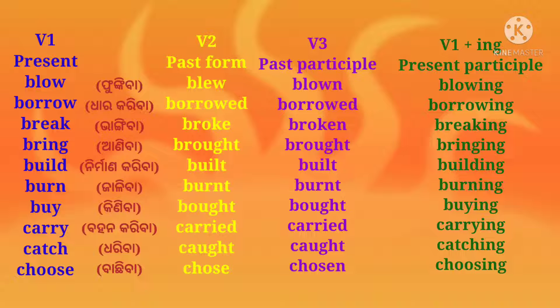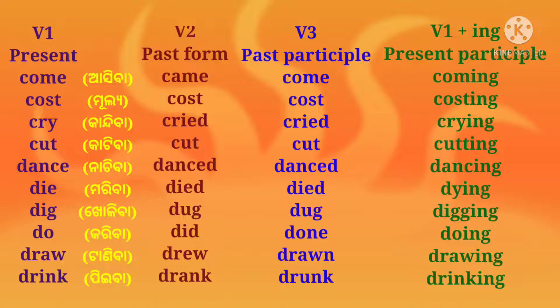Choose (bachiba): second form — chose; third form — chosen; fourth form — choosing. Come (asiva): second form — came; third form — come; fourth form — coming. Cost (mulya / dam): second form — cost; third form — cost; fourth form — costing.